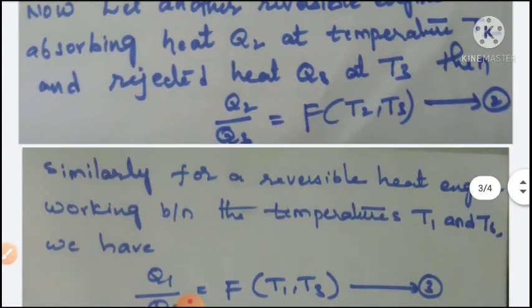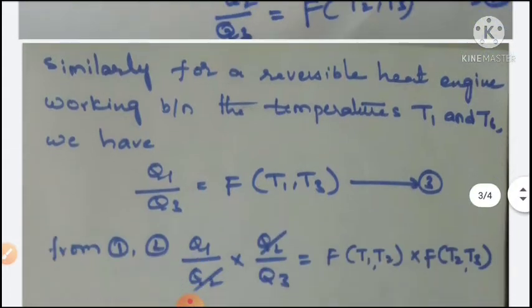Similarly, we assume one more reversible heat engine working between temperatures T1 and T3. Then, just as equations 1 and 2, we write Q1 by Q3 equal to F(T1, T3) — that is equation number 3.